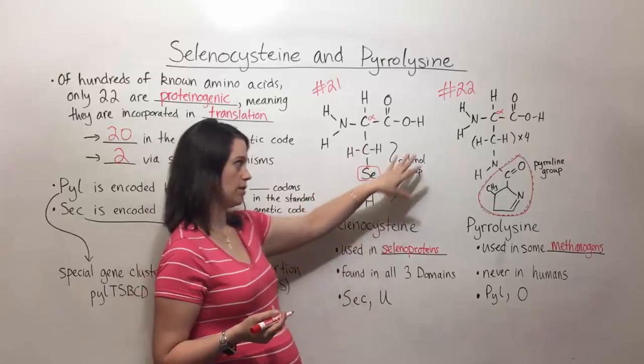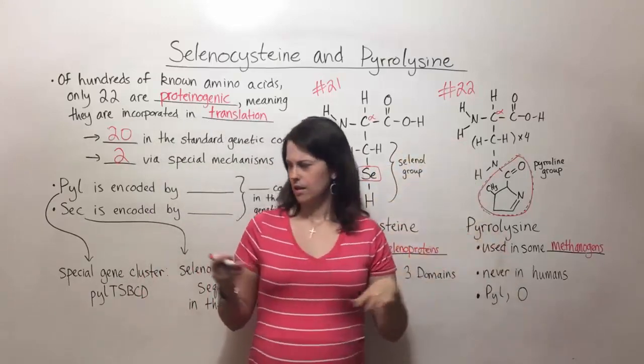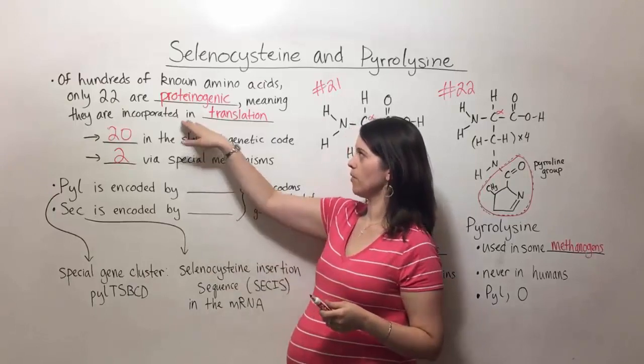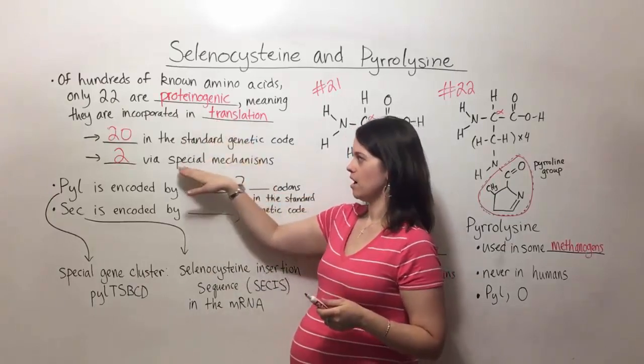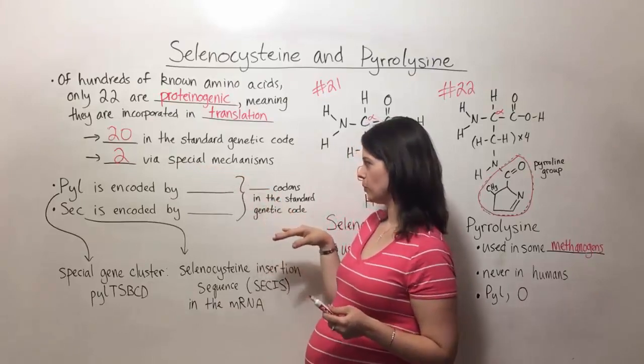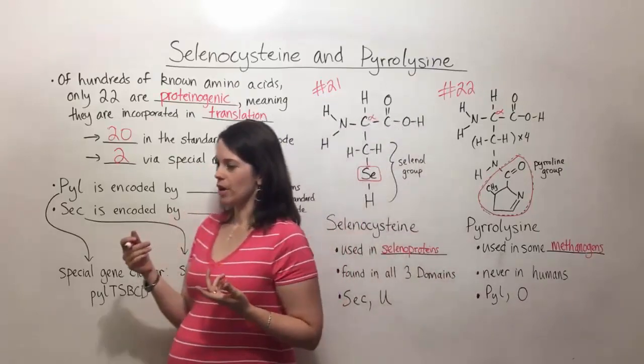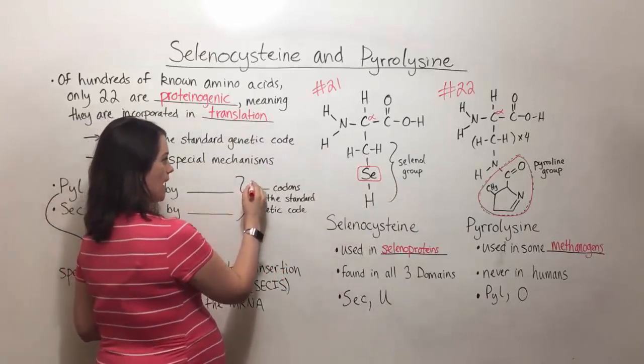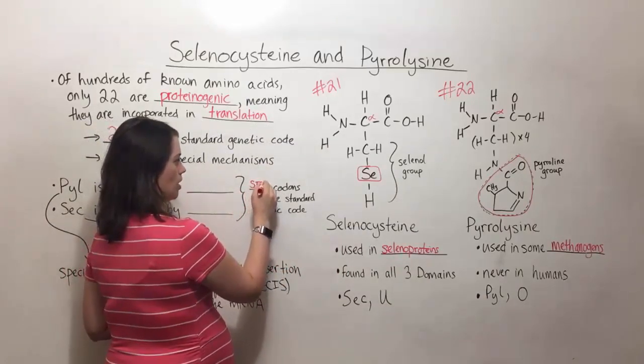So now that we know a little bit more about selenocysteine and pyrolysine, let's talk about how they actually get incorporated in translation. In other words, what are their special translation mechanisms? Well, it turns out that they are both coded for by stop codons.